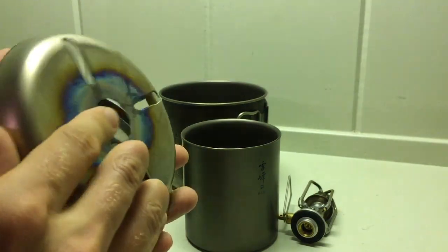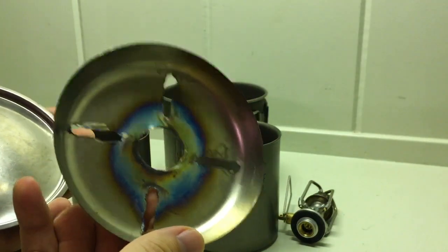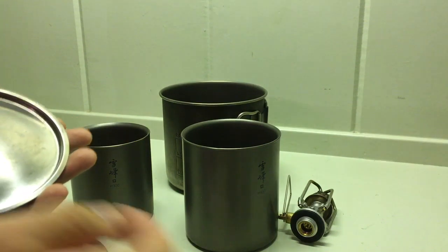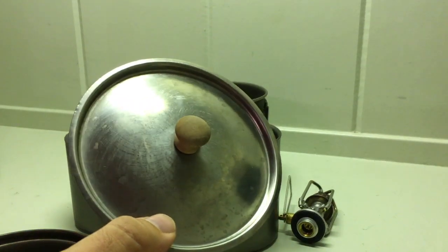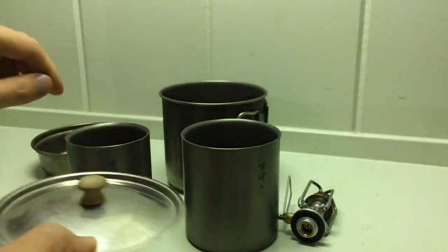This is a little windscreen that I made out of a Snowpeak bowl. And this lid is actually offered by 4-Dog Stove Company.